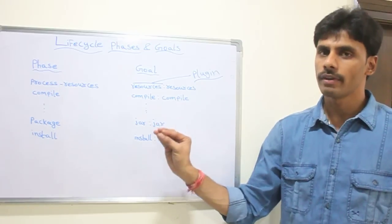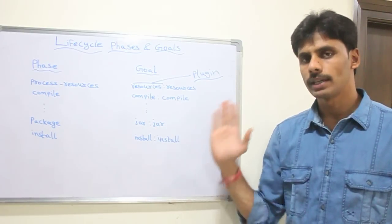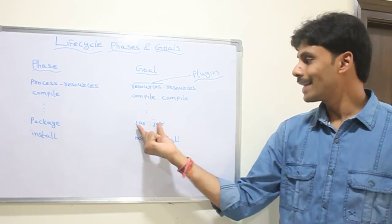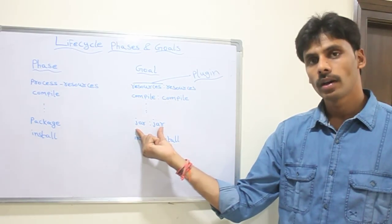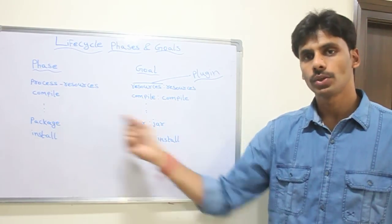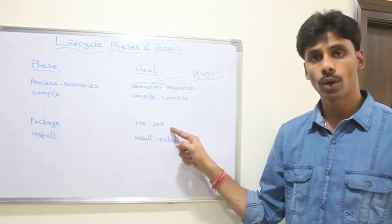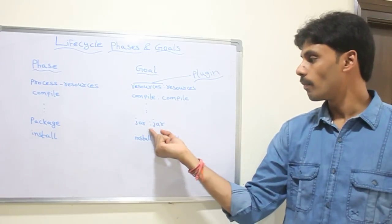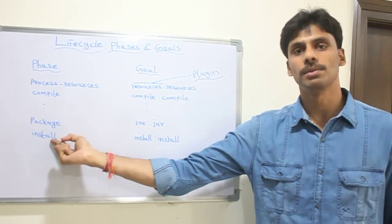There can be multiple goals bound to a phase but you usually see that there is one goal bound to a particular phase. So even you can directly execute a goal instead of executing a phase. You can say maven space jar colon jar. It is going to execute again all the phases before the phase to which this goal is bound.